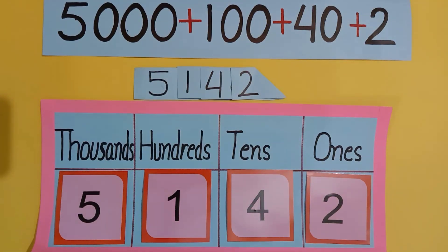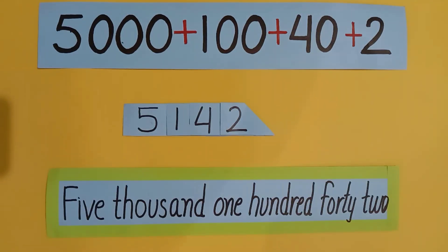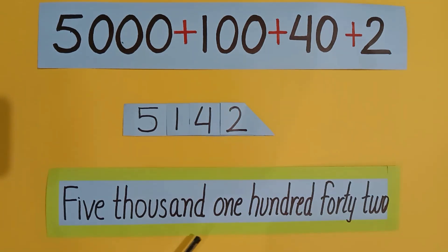Five thousand, one hundred, forty, two. Students, we will write this number in figures. In words, we write this number as: five thousand, one hundred, forty-two.